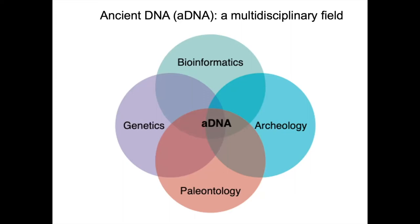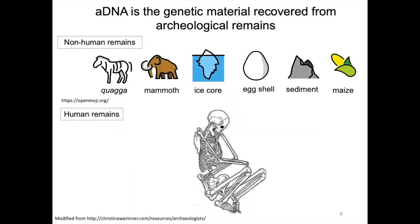Ancient DNA is a multidisciplinary field since it involves interactions with bioinformatics, genetics, paleontology, and archaeology. By definition, ancient DNA is the genetic material recovered from non-human and human archaeological remains. Non-human remains include animal tissues like mammals, ice cores, eggshells, sediments from burials, and ancient plants.